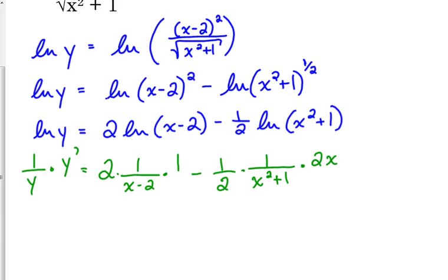Now let's make this look a little bit nicer. On the left side, I'm just going to write that as y prime over y. We've got 2 over x minus 2 minus, those 2's cancel, the 1 half and the 2 cancel, so we've just got x over x squared plus 1.